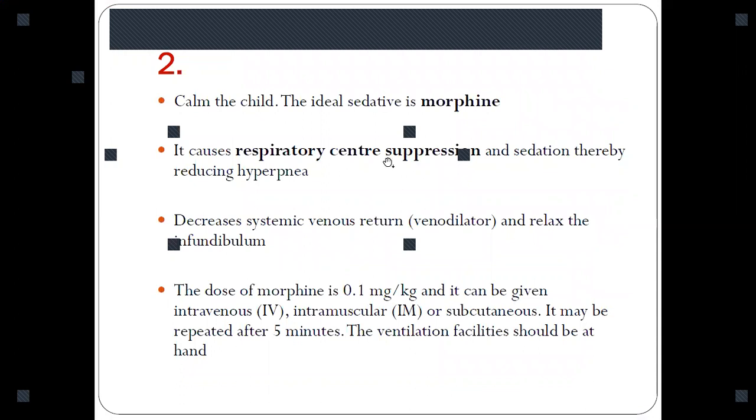The respiratory center which is there in the child is very immature before two years of age, and thus it responds hyper-responsively to hypoxia, and thus because of that cyanotic spells occur. So if you suppress the respiratory center by using a sedative morphine, there is decreased activation of respiratory center and thus it reduces hyperpnea.